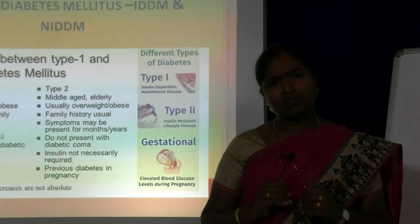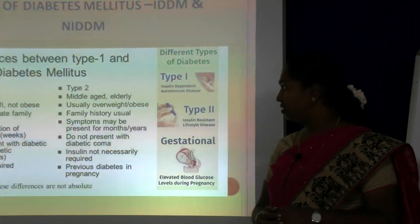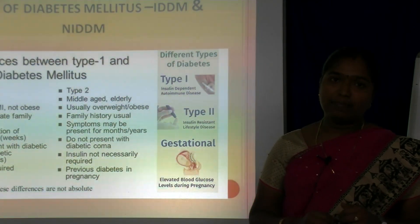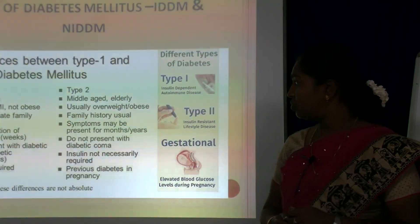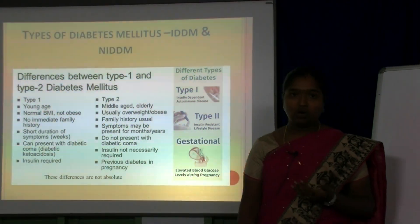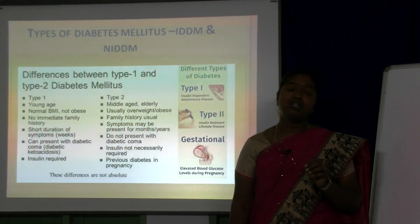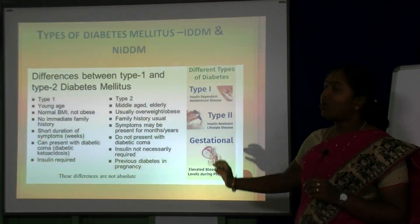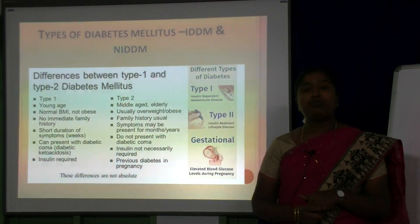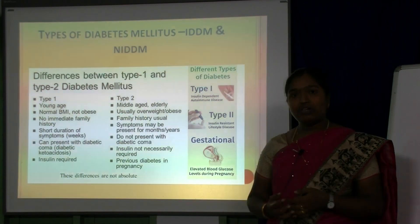The symptoms in Type 1 diabetes are of short duration. In Type 2, symptoms may be present for months or years. Diabetic coma — that is diabetic acidosis or ketoacidosis — is present in Type 1 diabetes, whereas diabetic coma is not present in Type 2. Insulin is required for Type 1 diabetes, whereas insulin is not necessarily required for Type 2. Previous diabetes seen in pregnancies is also noted.